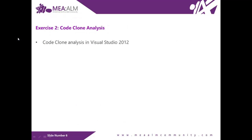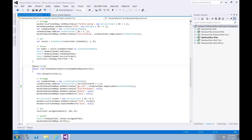Exercise 2: Code Clone Analysis. In this exercise you will learn about the new code clone analysis feature in Visual Studio 2012. This tool looks for semantically similar code using a heuristic search technique rather than simply searching for exact matches. Let's get back to Visual Studio and select Analyze.